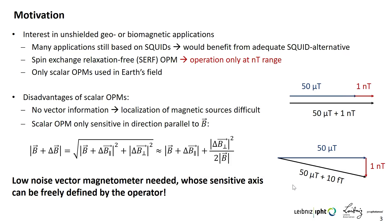One of these adequate alternatives are SERF OPMs, because they provide similar sensitivity as well as the ability to do vectorial measurements, but they can only be operated in the nanotesla range, so they are not suited for unshielded measurements. What remains in our case is the use of scalar OPMs that can be used in Earth's magnetic field. The disadvantage of scalar OPMs is that in the basic configuration they do not provide vector information, so localization of magnetic sources is more difficult.